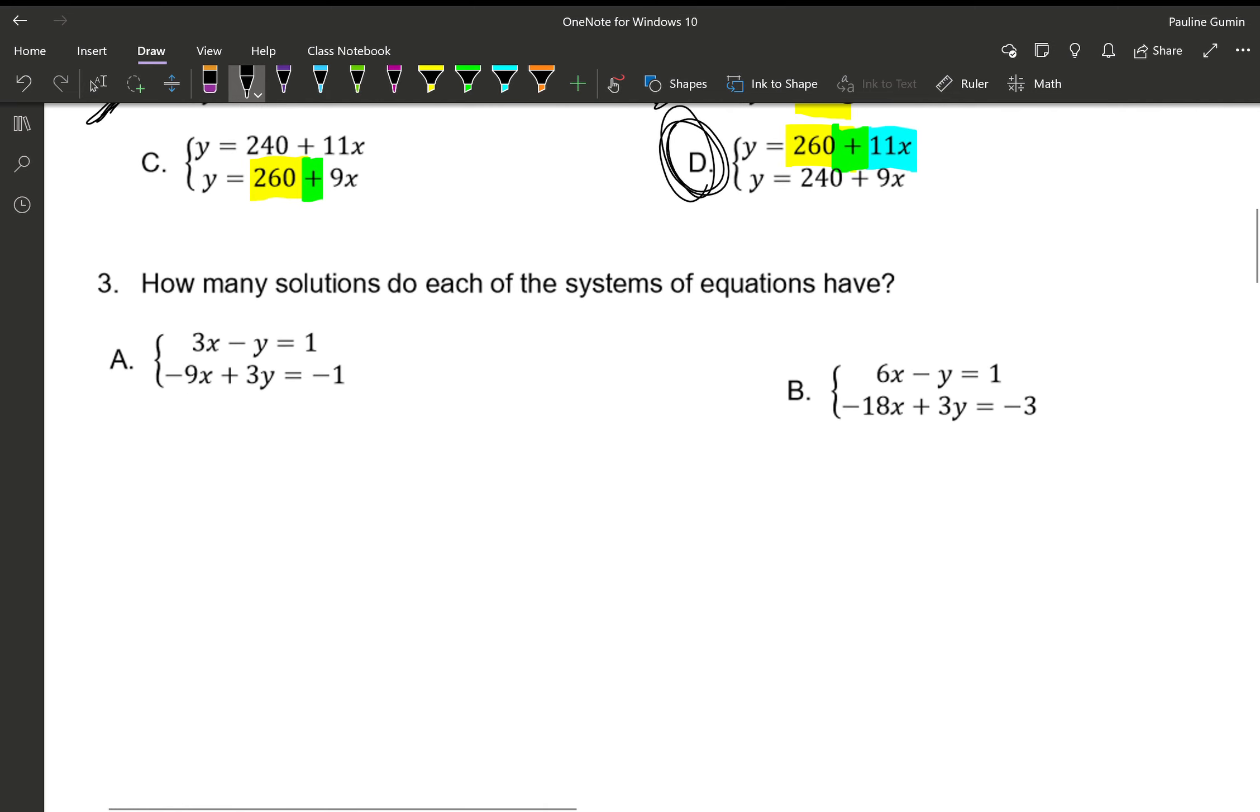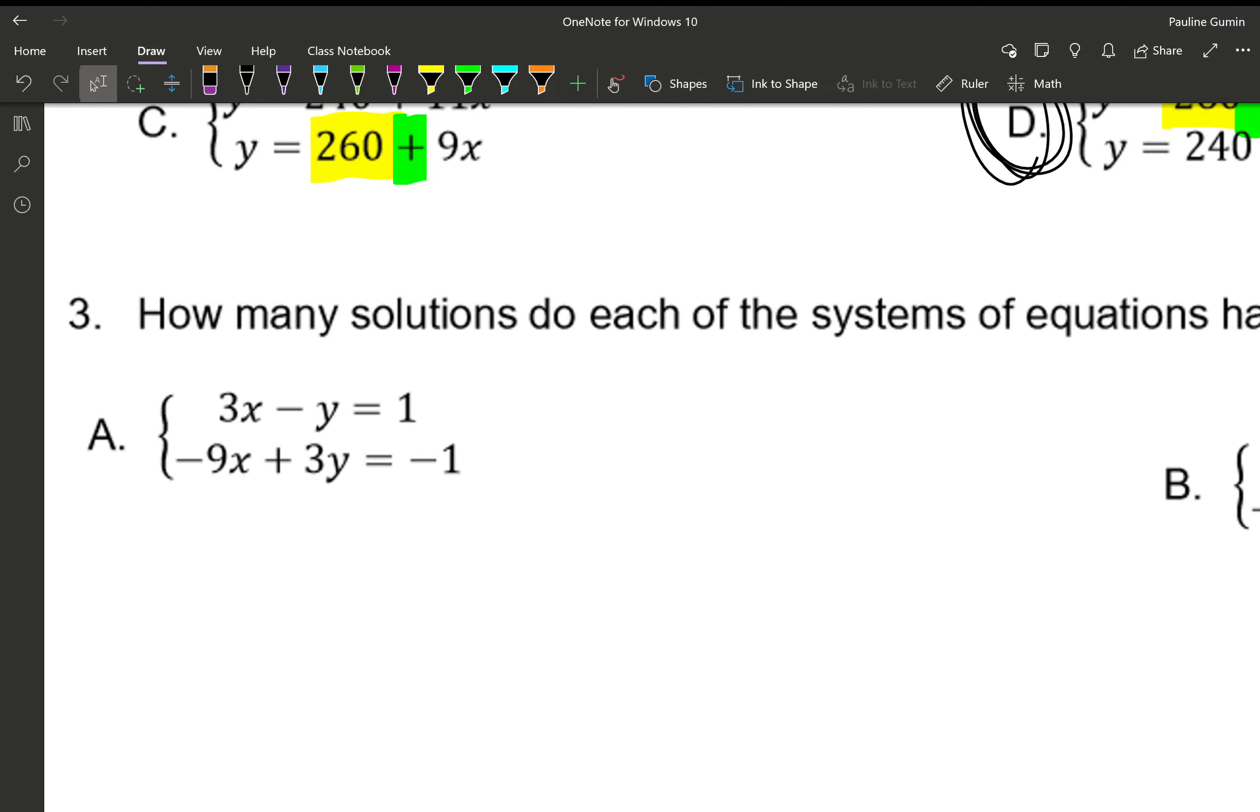Number three. How many solutions does each system have? Now unfortunately, these systems are set up not in an easy way for us to look and tell. So I'm just going to go ahead and start solving it. Now, the way I would approach this is, I feel like getting rid of the Y's because they look a little easier because they're smaller numbers. I have a negative 1Y and a positive 3. To make them eliminate, I'm going to multiply the top equation by 3. That way, we'll have a negative 3Y and a positive.